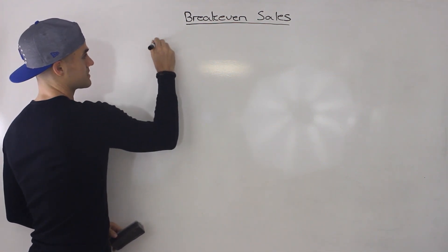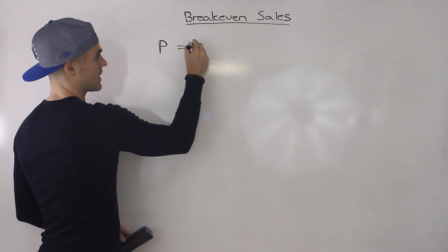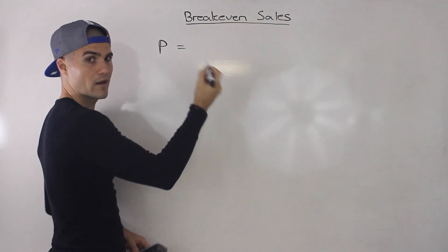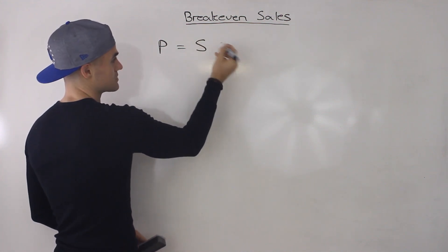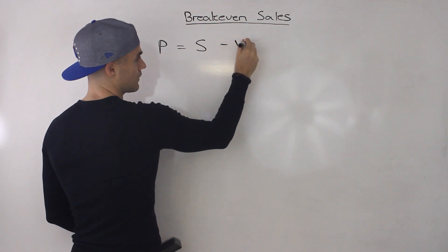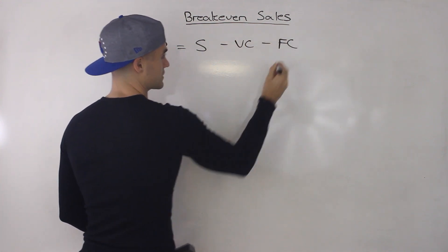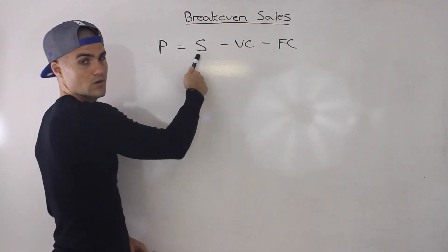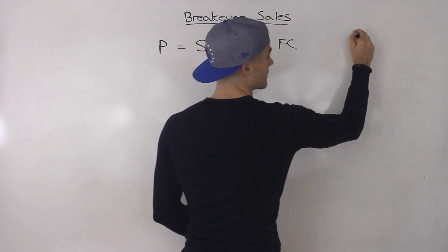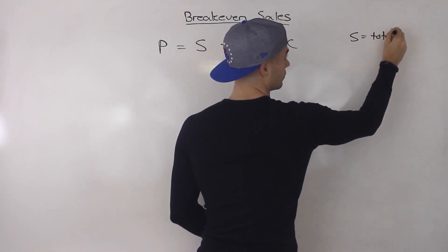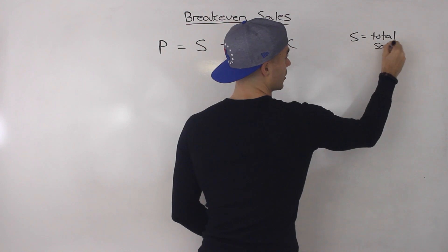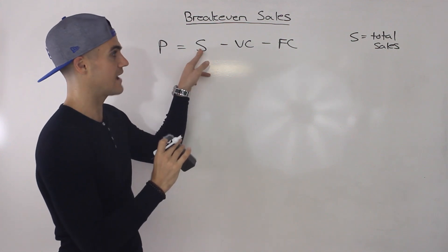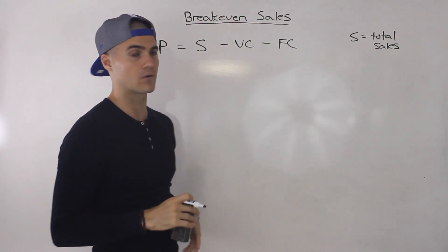To start this off, I'm going to reintroduce the general equation where profit equals revenue minus variable cost minus fixed cost. Instead of revenue, I'm going to write S for sales. So S equals the total sales — not the selling price per unit as in the previous video, but the total amount of sales.